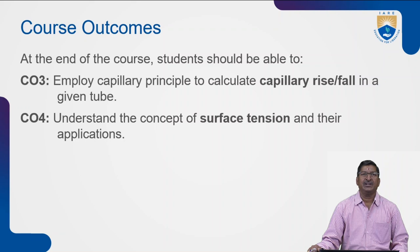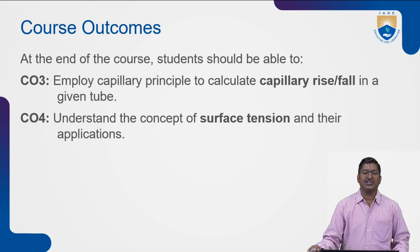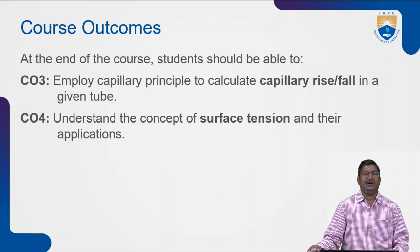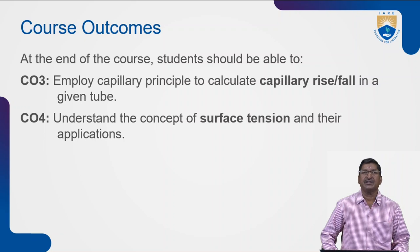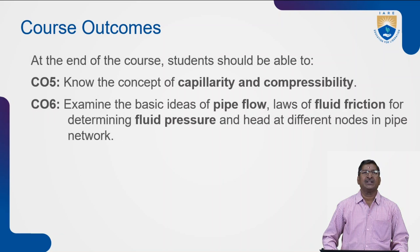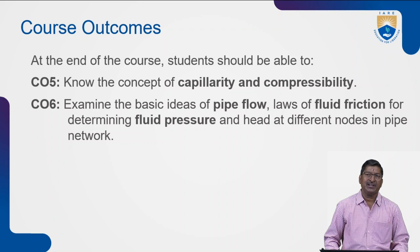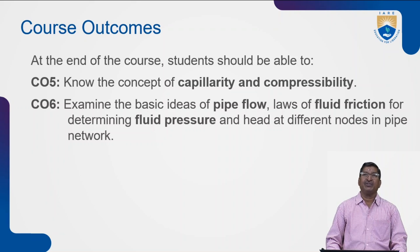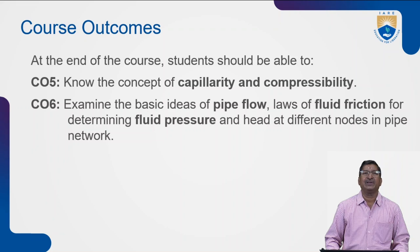These concepts will also be learned by the end of this course. CO4 is to understand the concept of surface tension and its applications — where surface tension applications are applied. That will also be learned by the student as course outcome 4. Course outcome 5 covers capillarity and compressibility — what they are, where they are applicable, and what are the advantages or disadvantages of capillarity and compressibility.